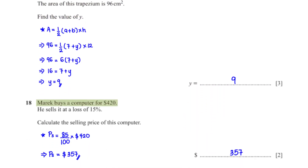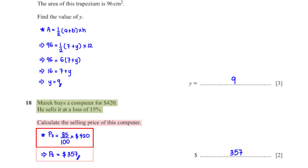Marek buys a computer for 420 dollars and sells it at a loss of 15%. Calculate the selling price of this computer. Since he is selling at a loss of 15%, we subtract 15% from 100%, giving us 85%. So the selling price is 85% times 420 dollars, which is equal to 357 dollars.